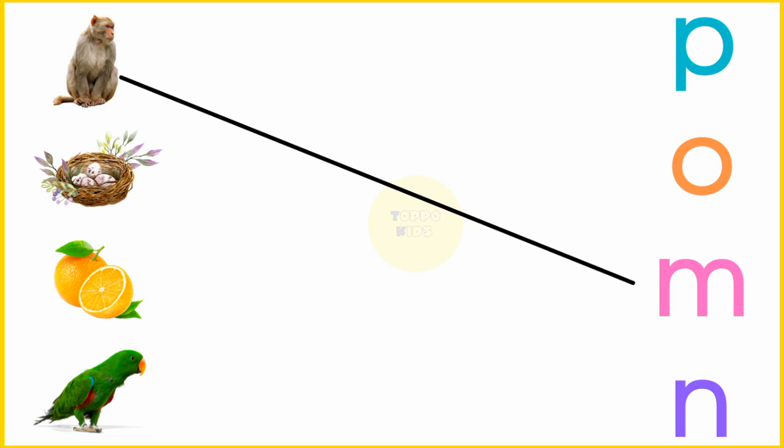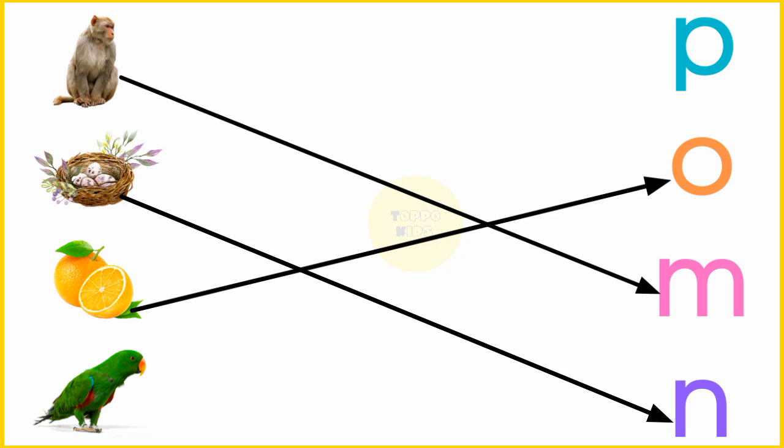M. M for monkey. N. N for nest. O. O for orange. P. P for parrot.